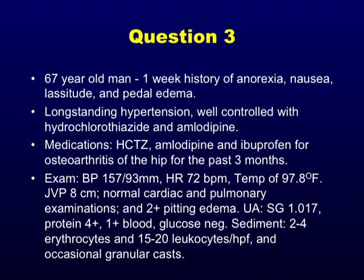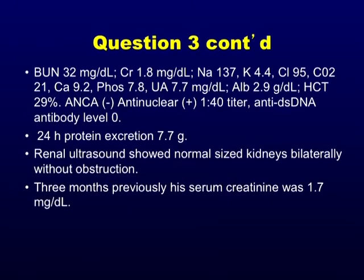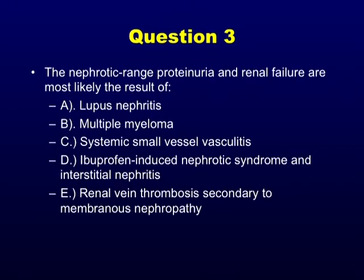Urinalysis notable for 4-plus albumin, 1-plus blood, negative for glucose. Sediment showed 2-4 red cells and 15-20 leukocytes per high power field and occasional granular casts. BUN 32, creatinine 1.8. Phosphorus elevated at 7.8, uric acid elevated at 7.7, albumin low at 2.9, anemia with hemoglobin around 9.5-10. ANCA negative, ANA mildly positive, anti-double-stranded DNA level zero. 7.7 grams of protein in a 24-hour urine. Ultrasound showed normal-sized kidneys without obstruction; previous creatinine was 1.7. The nephrotic range proteinuria and renal failure are most likely the result of ibuprofen-induced nephrotic syndrome and interstitial nephritis.